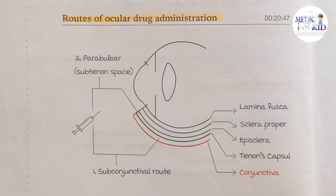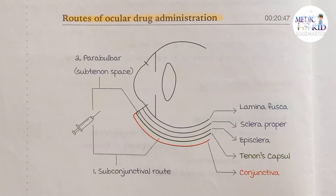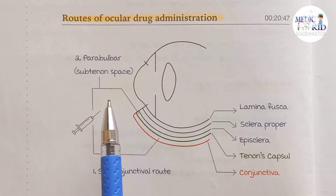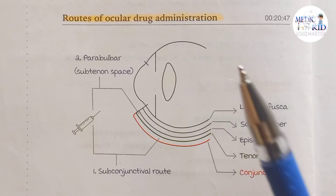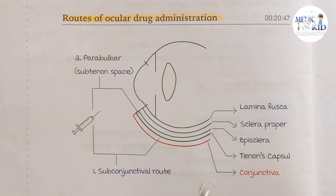The topical route is the most commonly used route of ocular drug administration. Topically means the drug is directly applied on the surface. We have two types of topical medications: eye drops and eye ointment. Eye drops are administered at least three minutes before eye ointment. The advantage of eye ointment is that it provides a longer time of contact with the eye surface.